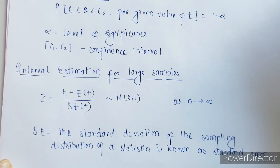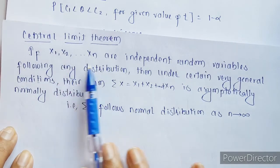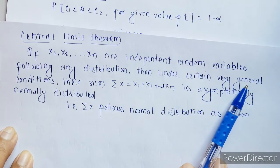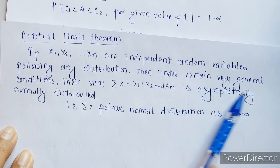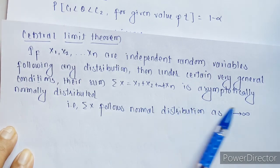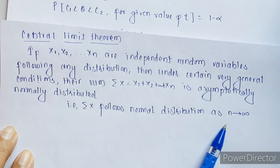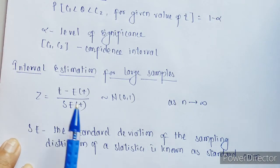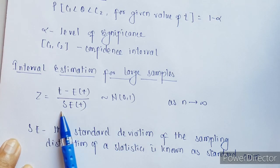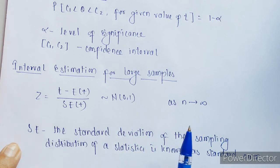And this is given by the central limit theorem. What is central limit theorem? Central limit theorem says that if x1 till xn are independent random variables following any distribution, then under certain very general conditions, their sum is asymptotically normally distributed. That is summation of x follows normal distribution as n tending towards infinity. So by this central limit theorem, what we can say is this standard normal variate or standardized variate is asymptotically normal as n is tending towards infinity.